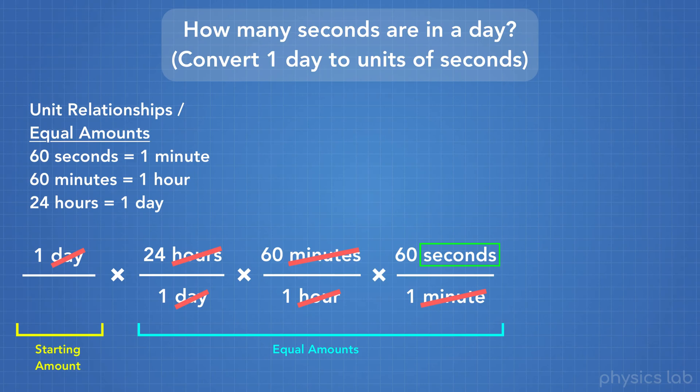So now that we've crossed out our units and found that we're only left with the unit we want, seconds, we know we wrote everything down correctly. Next, all we have to do is multiply these fractions to get our answer. We do that by multiplying all of the numbers on top, which gives us our top number or numerator, and then multiplying all of the numbers on the bottom, which gives us our bottom number or denominator.